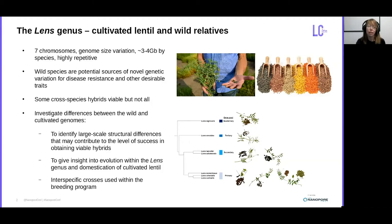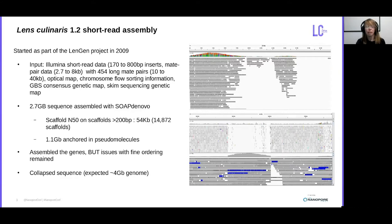Back in 2009, we began sequencing Lens culinaris as part of the LensGen project with the short-read technologies that were available at the time. We had a variety of short-read data, chromosome flow sorting information, a GBS consensus genetic map based on three different populations, SCIM sequencing map, and optical map. But in the end, we were only able to assemble 2.7 gigabases of sequence, which was highly fragmented with a scaffold N50 of 54 KB, and only 1.1 gigabases of that was anchored into pseudomolecules. We had assembled the genes fairly confidently, but there were a lot of issues with fine ordering, as well as persistent issues with repetitive content, as shown in the alignment of long reads to the earlier assemblies. We clearly had a lot of collapsed repeats because of these massive pileups of long-read data into those repetitive sections relative to the coverage in the rest of the areas.